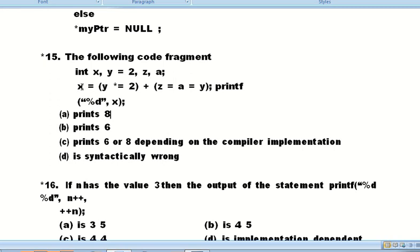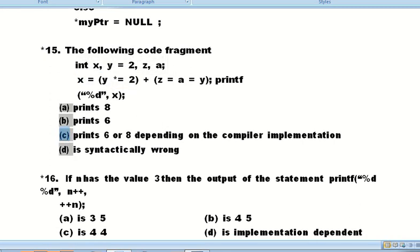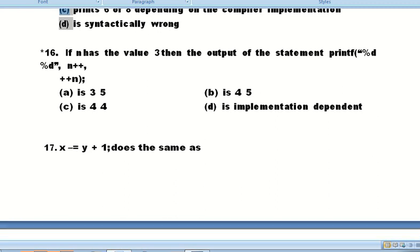Question number sixteen: If n has the value 3, then the output of the statement printf with n++ and ++n - post-fix increment and pre-fix increment. The output is implementation dependent. Option D is the correct option.